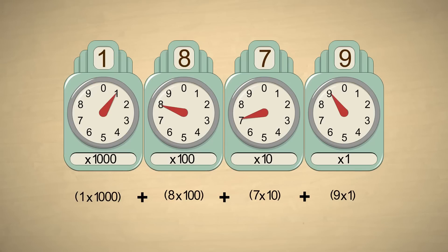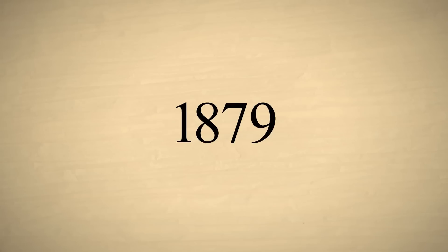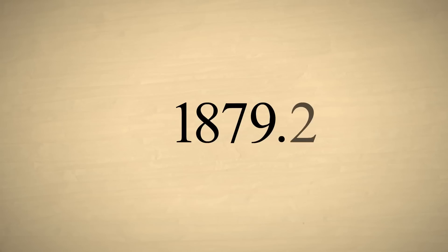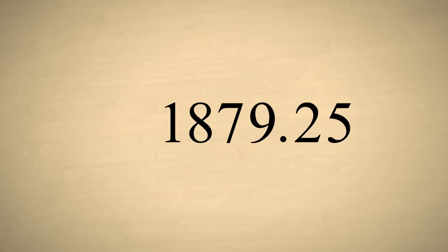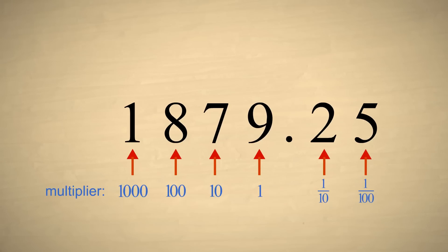Using decimal notation, we can represent any integer. But decimal notation is also capable of representing fractional quantities by adding a decimal point immediately to the right of the one's digit. We can then add as many digits as we like to the right of the decimal point. Each of these column multipliers is one-tenth the size of the column to the left, continuing the pattern of multipliers.